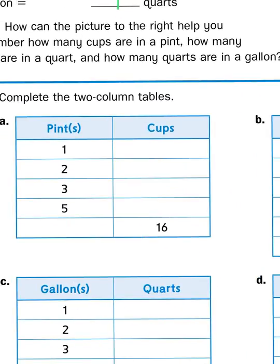there are two cups in every pint, so that must mean that there are two cups in one pint and four cups in two pints, because two times two equals four. So all you have to do is multiply the number in the left-hand column by the conversion unit.